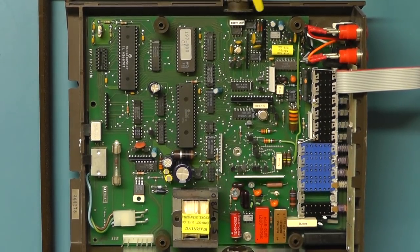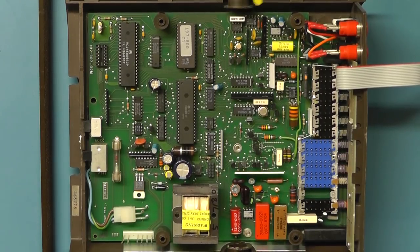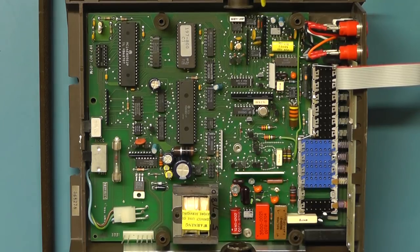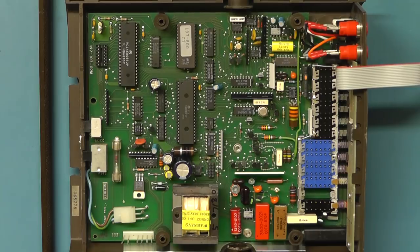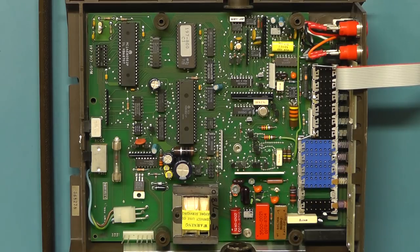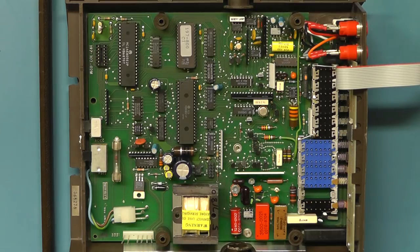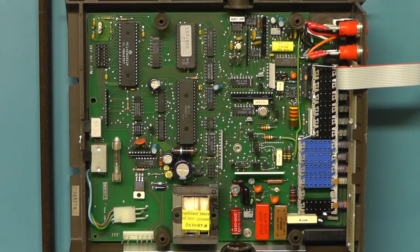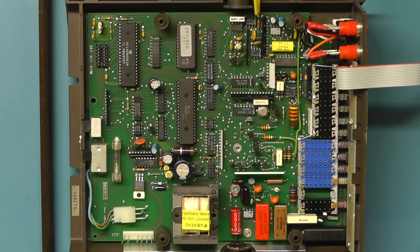In this area of the board here we have the voltage reference circuitry and again they're using a temperature control zener. The only difference this time is that they're using a slightly better quality zener. This one is actually a 1N4579 as opposed to the 1N4577 which we saw on the Keithley 175 meter. And this particular zener has got a temperature coefficient of 0.0005 whereas the one we saw previously on the 175 meter had a temperature coefficient of 0.002 so this zener is obviously a much higher tolerance zener than we saw previously.